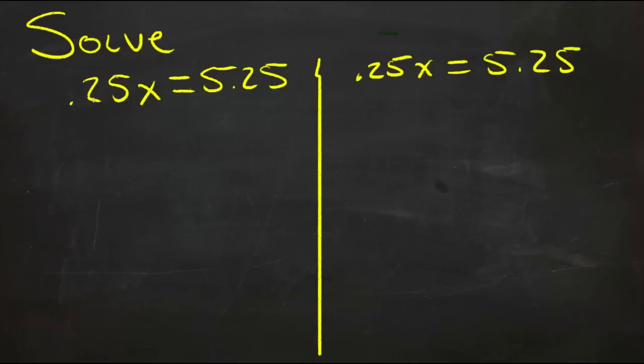.25x is the same as 1 quarter of x, so we can write that as 1 fourth times x, and that's equal to 5 and 1 fourth.